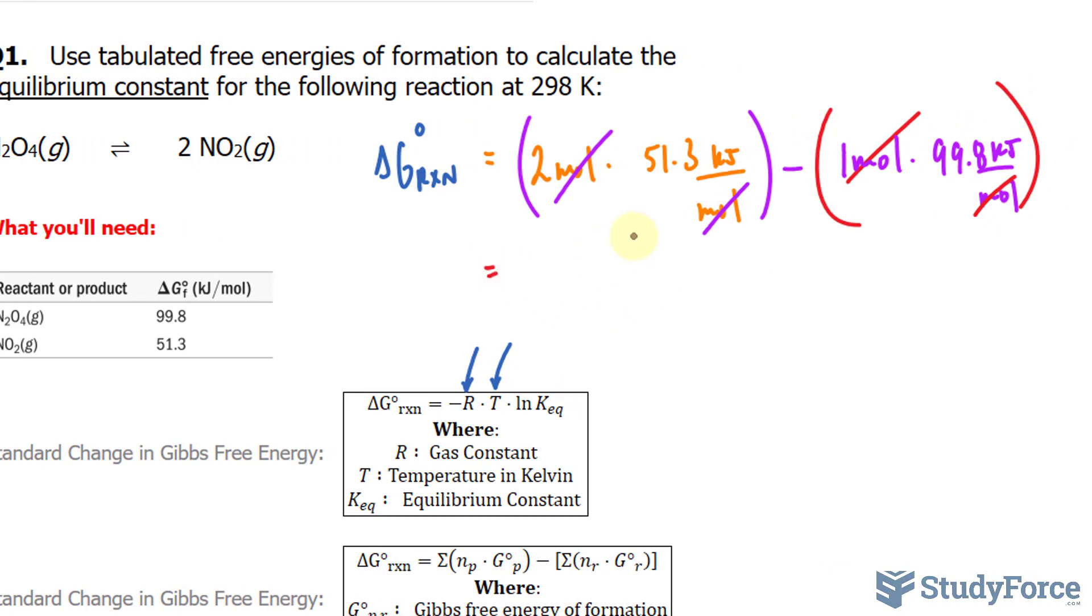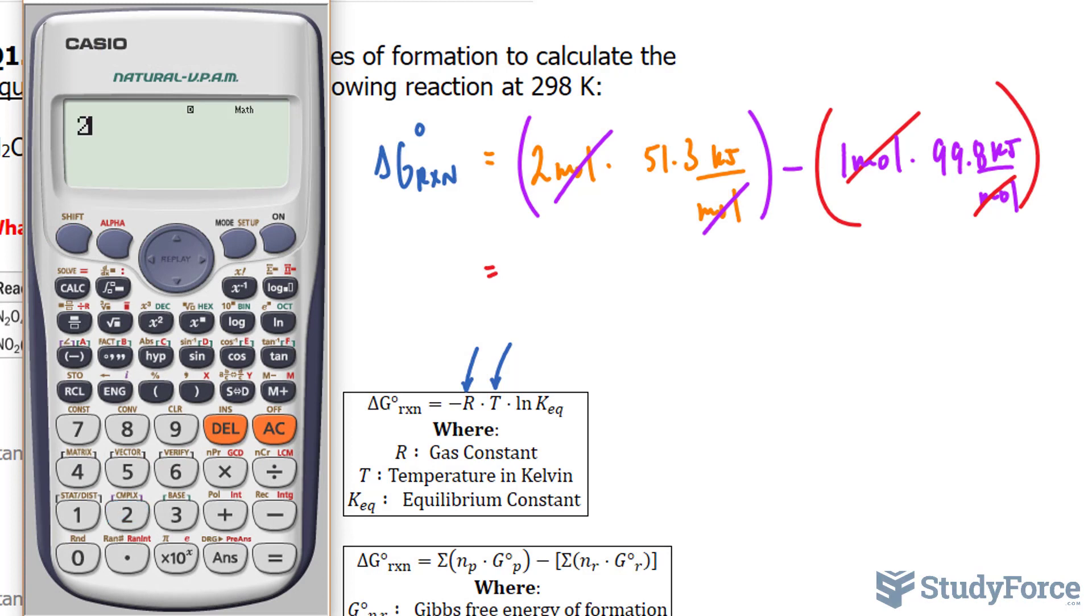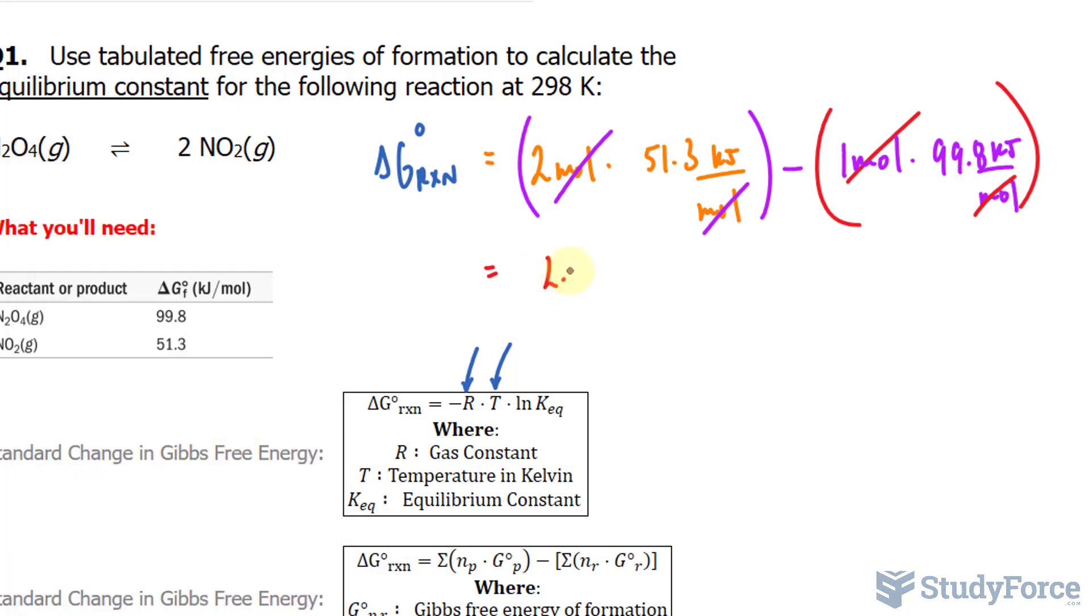We should end up with a number that's strictly in kilojoules. Using our calculator, 2 times 51.3 minus 99.8 gives us 2.8 kilojoules.